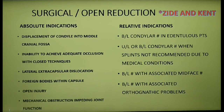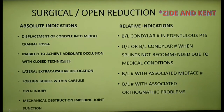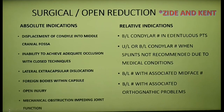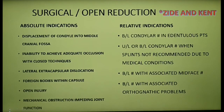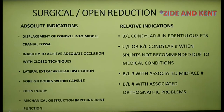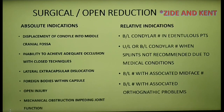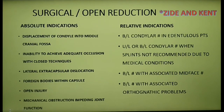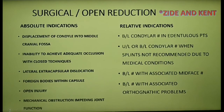Relative indications include: bilateral condylar fractures in an edentulous patient where a splint cannot be fabricated due to severe ridge atrophy; unilateral or bilateral fractures where splinting is not recommended due to concomitant medical conditions or when physiotherapy is not possible; bilateral fractures associated with comminuted mid-facial fractures; and bilateral fractures associated with other orthognathic problems. These indications must be carefully evaluated on an individual patient basis before deciding on a treatment plan.